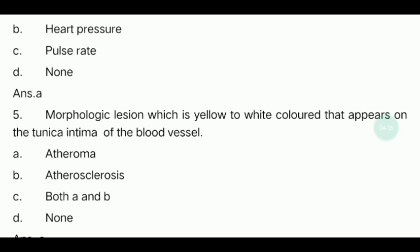Fifth question: Morphological lesions which are yellow to white colored that appear on the tunica intima of the blood vessel. The answer options are Arrhythmia, Atherosclerosis, both A and B, or None. One of the fatty material deposits forms in the arteries. The answer is Atherosclerosis.